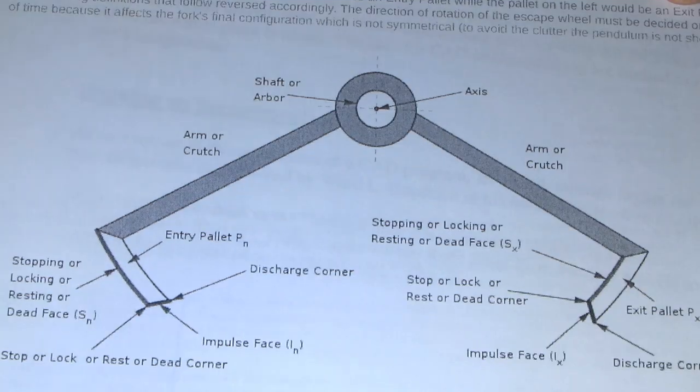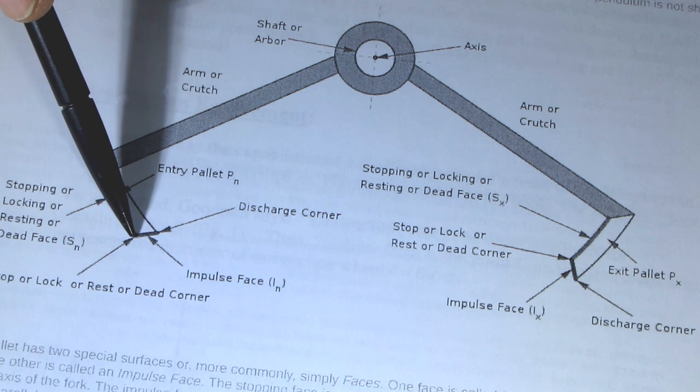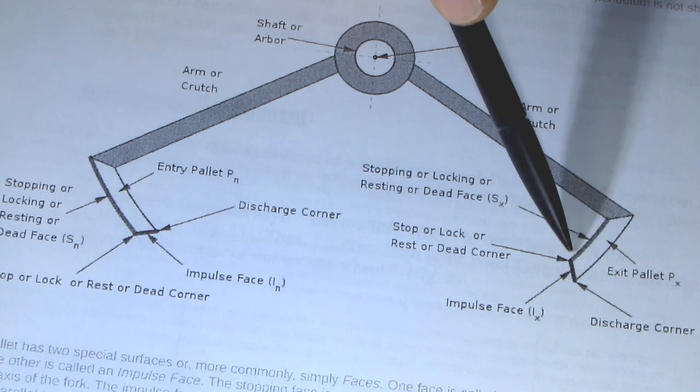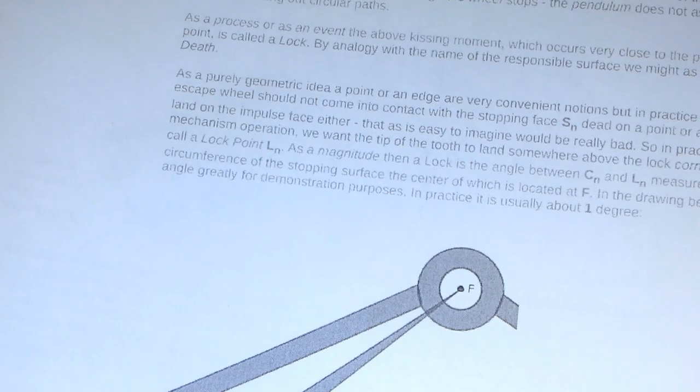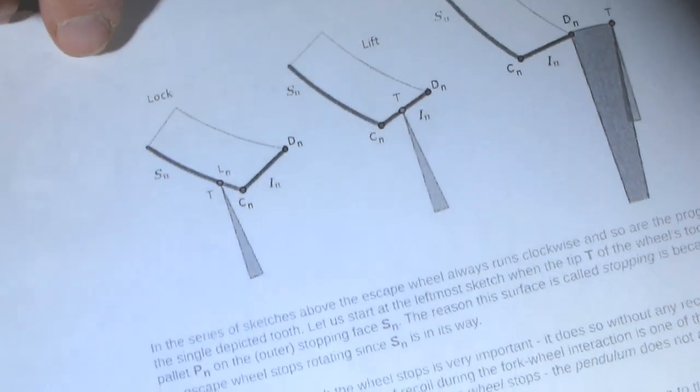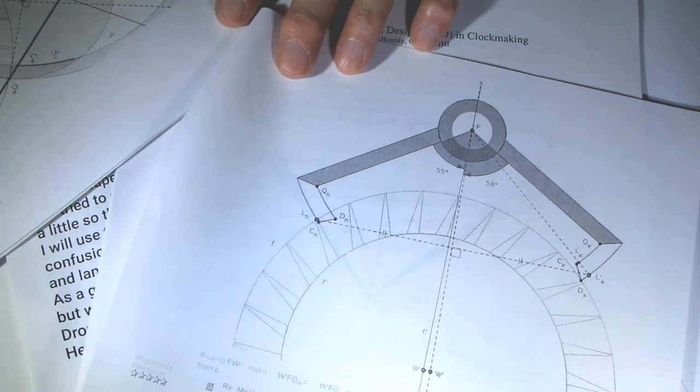And here is the verge with all its attributes: entry and exit pallets, locking and impulse faces, arms and corners. This picture shows how verge interacts with an escape wheel.